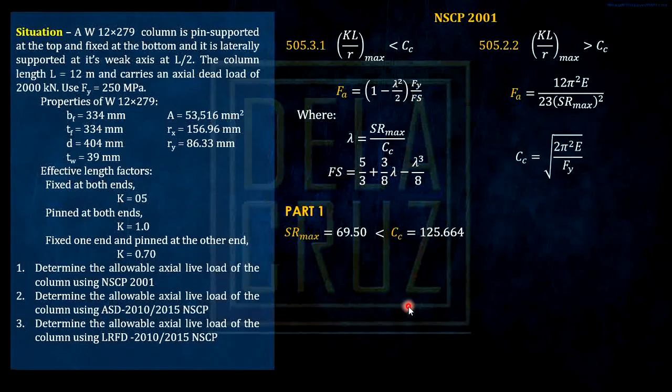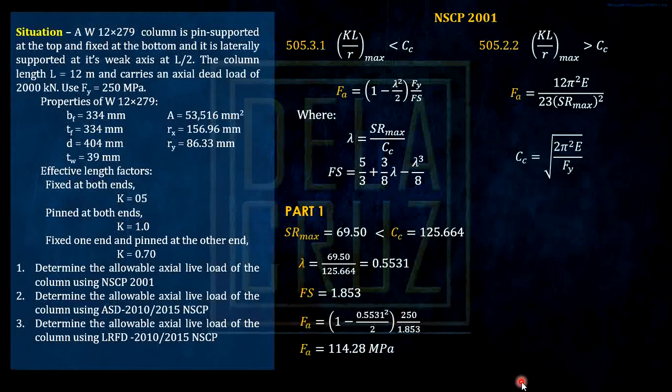First we need to calculate lambda and FS. The lambda is the ratio of SR max over CC. Calculating the ratio, that is the lambda. Now calculating the FS, substitute the lambda. Direct substitution. Now we will calculate the FA: 1 minus lambda squared divided by 2 times FY over FS, and we have 114.28 MPa. Finally, we will calculate the nominal strength, axial strength of the column. That is force equals stress, which is FA, times the cross-sectional area gross. Substituting, that is the nominal strength capacity of the column.